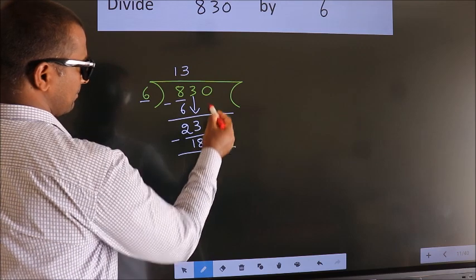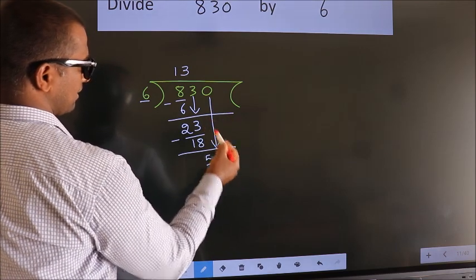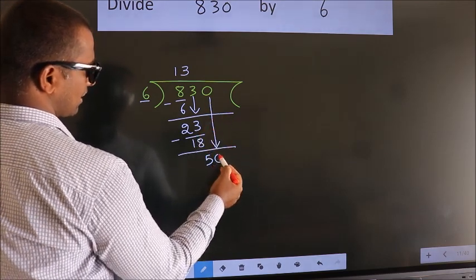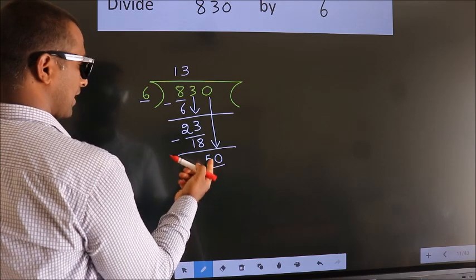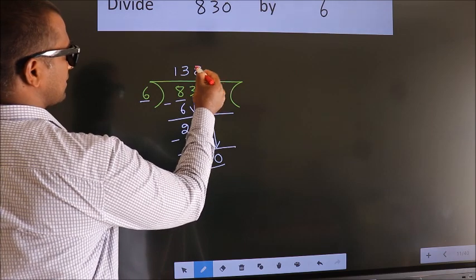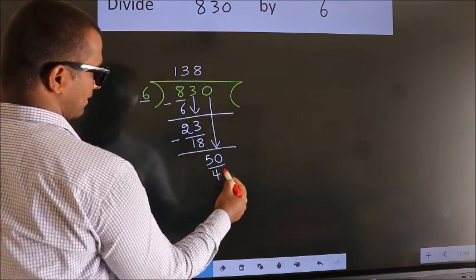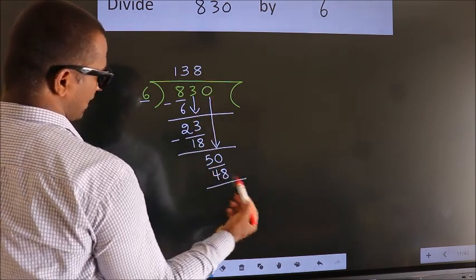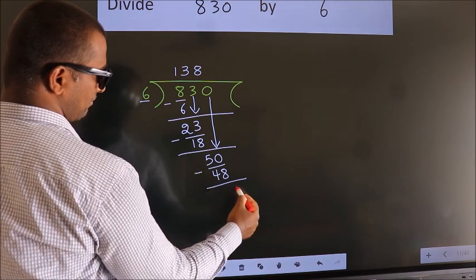After this, bring down the beside number. So 0 down. So 50. A number close to 50 in the 6 table is 6 times 8 equals 48. Now we subtract. We get 2.